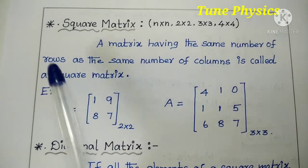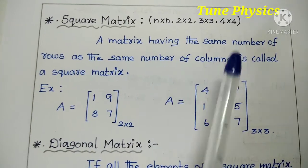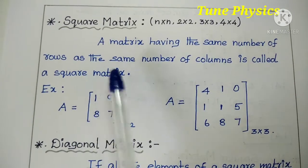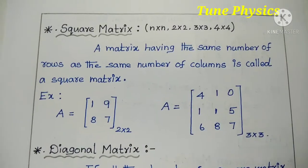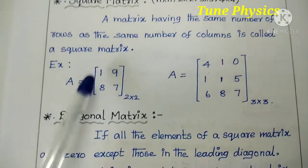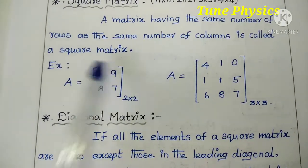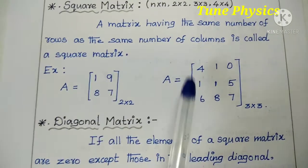Examples include a 3 by 3 matrix, a 4 by 3 matrix, and a 4 by 4 matrix.